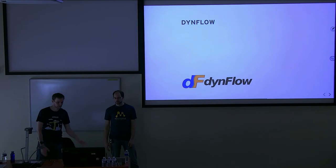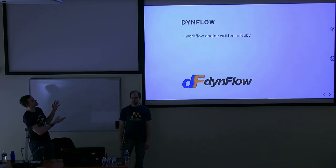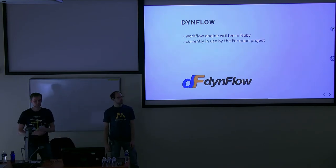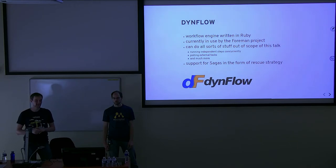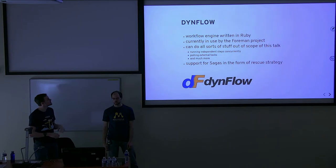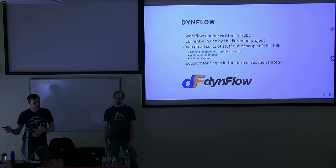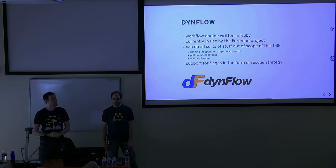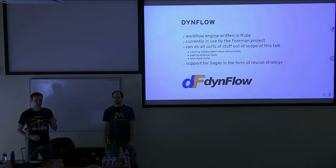On my side, the project is called Dimeflow — it's a workflow engine written in Ruby. You can call it workflow or back-end processing. It is currently in use by the Foreman project and can do all sorts of things, somewhat out of scope of this talk. Just to give you a sneak peek: it can run independent steps concurrently, it can poll external tasks, and much more. Support for Sagas was introduced in the form of a rescue strategy for execution plans.